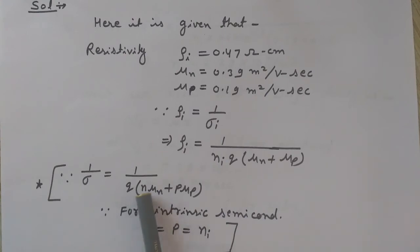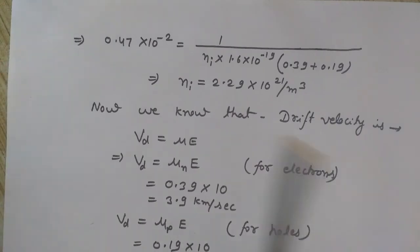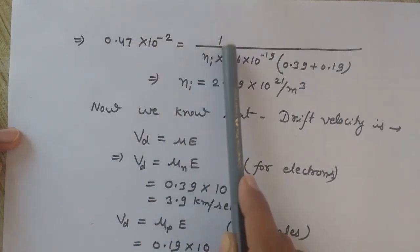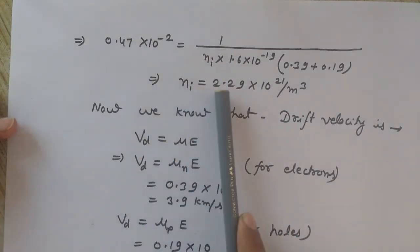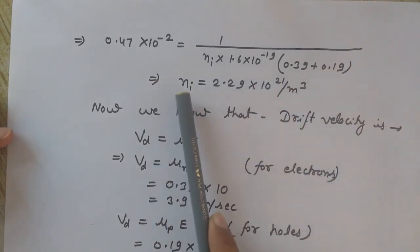So in this formula I will replace n and p with n_i, so here I get this. Take out this n_i common, so it becomes this. So all I need to do is just replace the values in this formula. On putting the values, from this I get n_i equals 2.29 times 10 to the power 21 per meter cube. This is the intrinsic concentration of charge carriers.